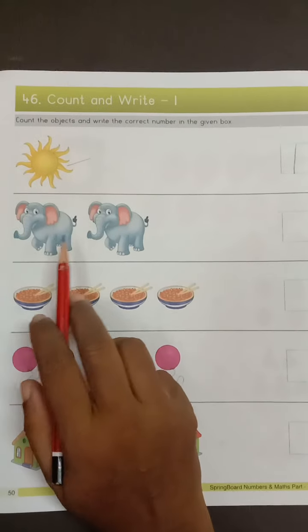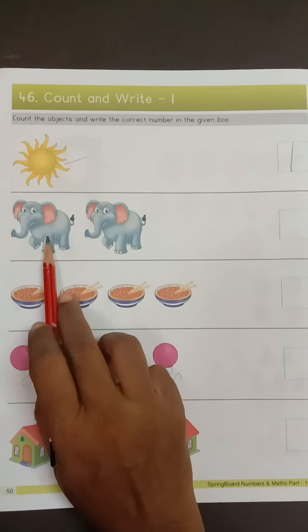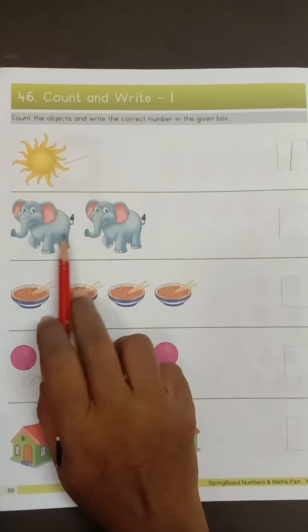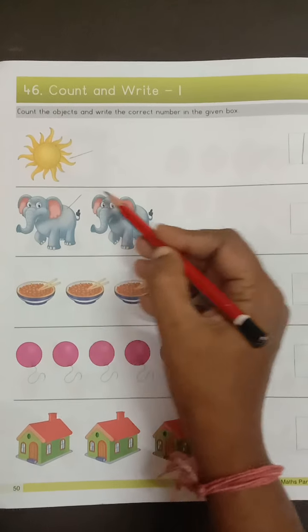Okay kids, next one is? Which picture is this? Elephant. So how many elephants are there? Count. One. Two.